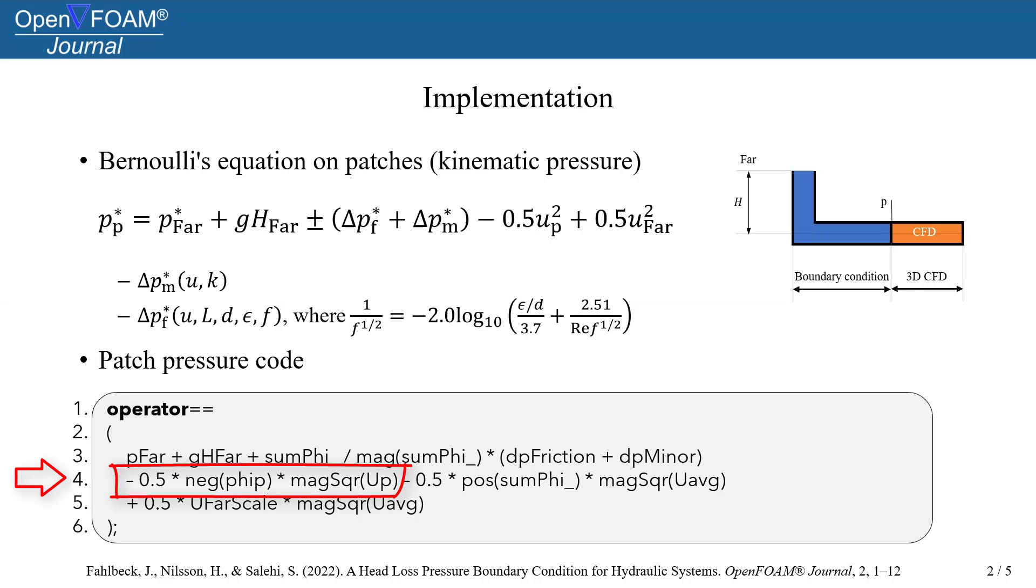First for an inflow case, where the kinematic pressure is subtracted on a face-to-face basis, whereas for an outflow case, the average velocity at the patch is used to calculate the kinematic pressure. And then at line 5, we see how the kinematic pressure far in the hydraulic system is added.